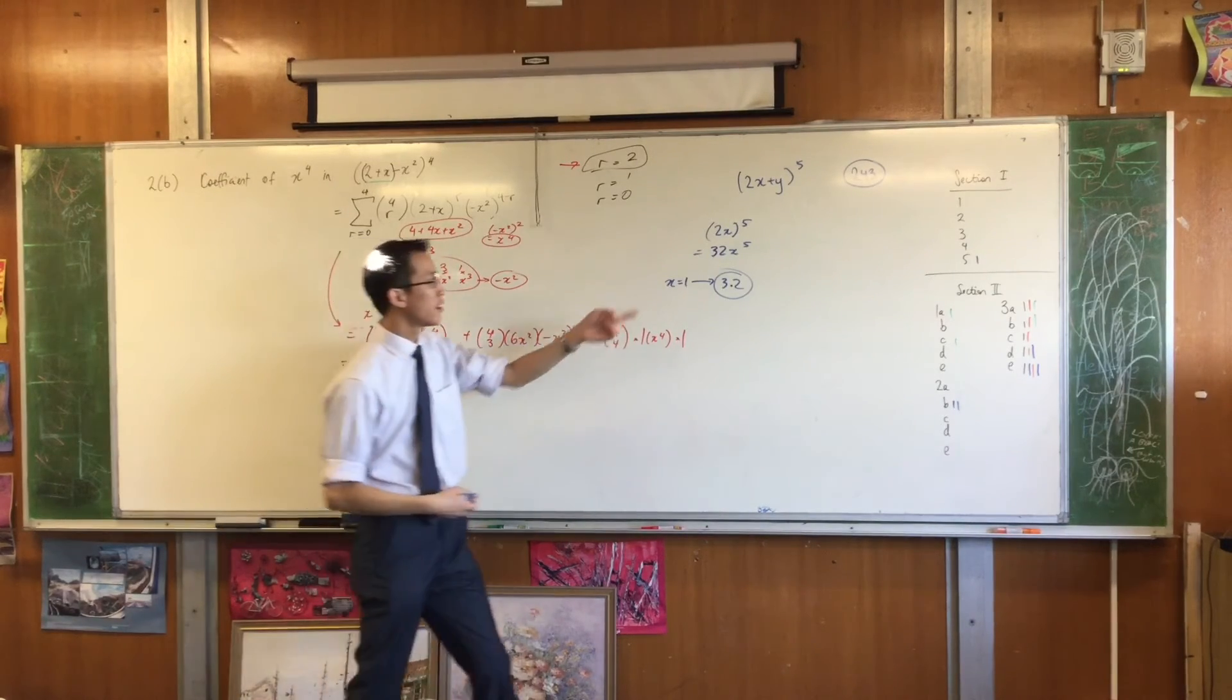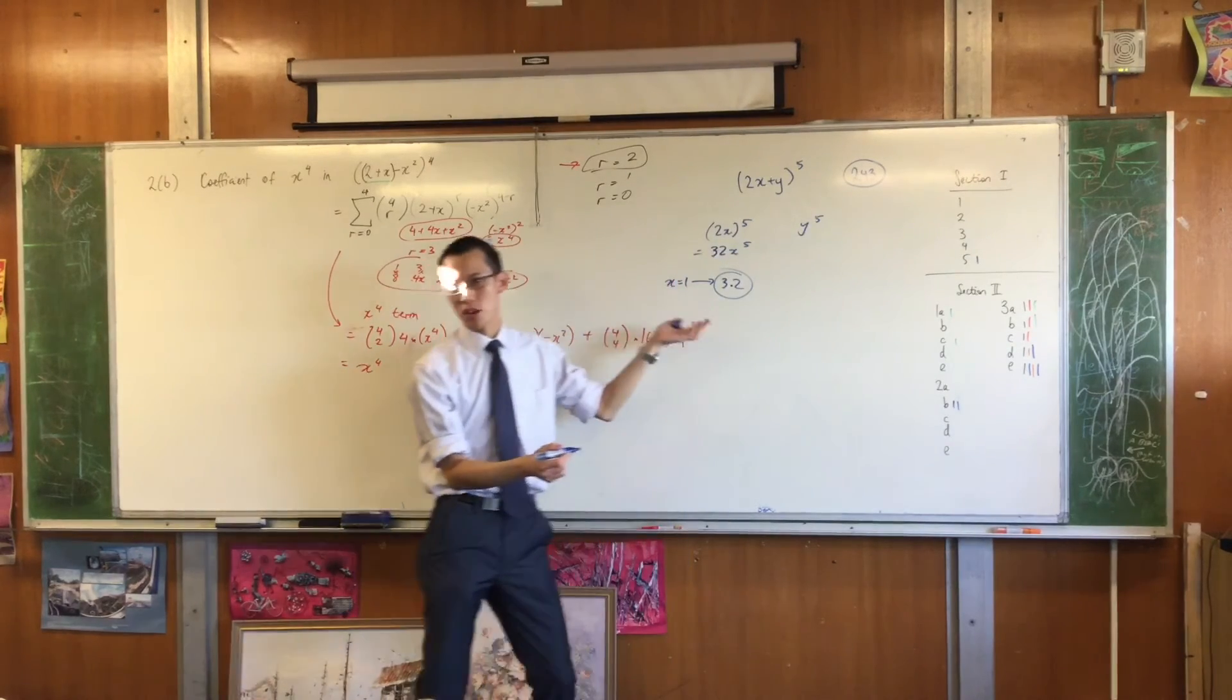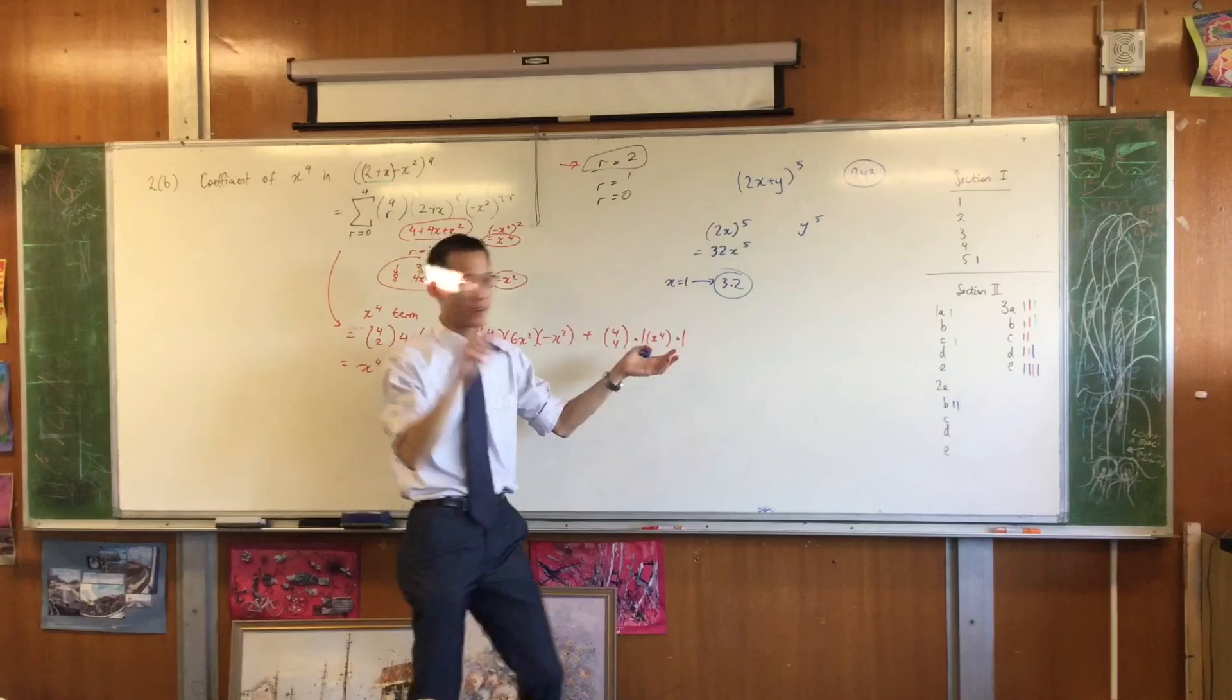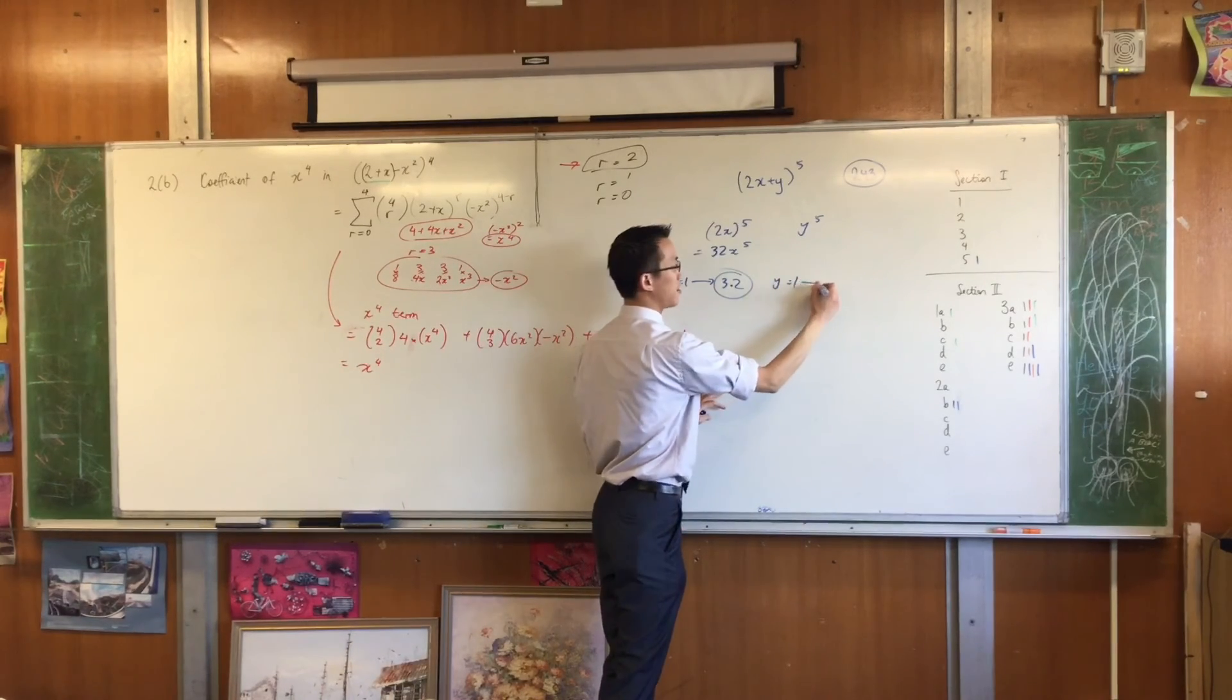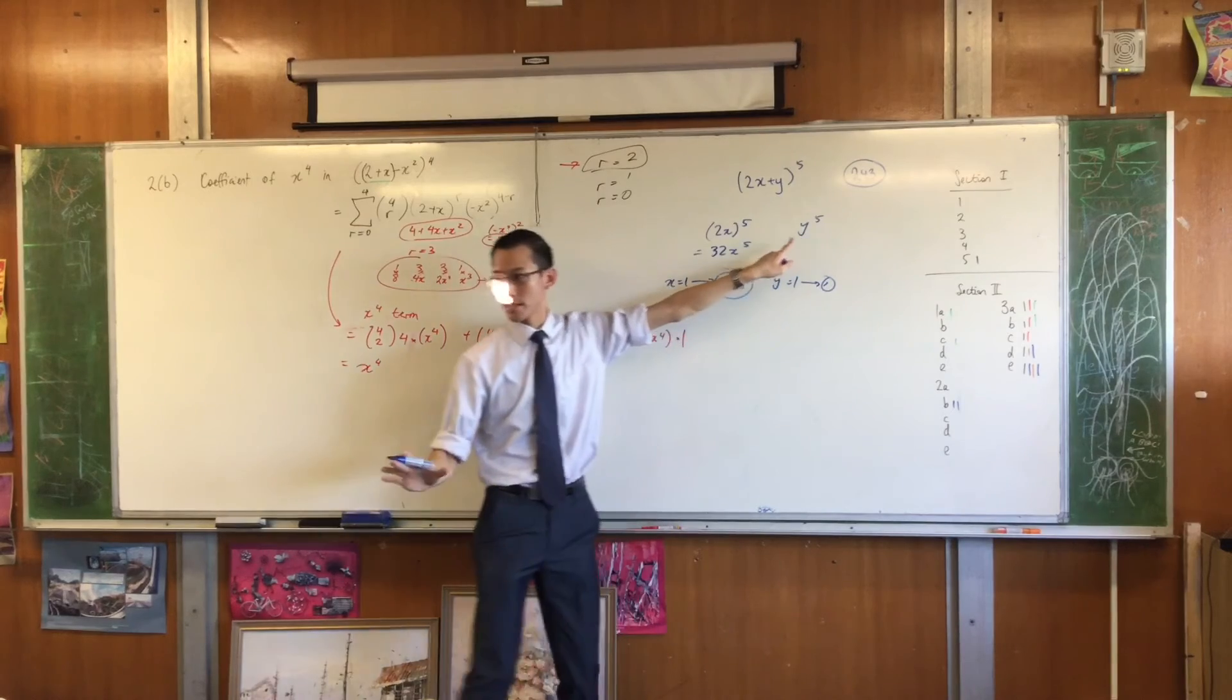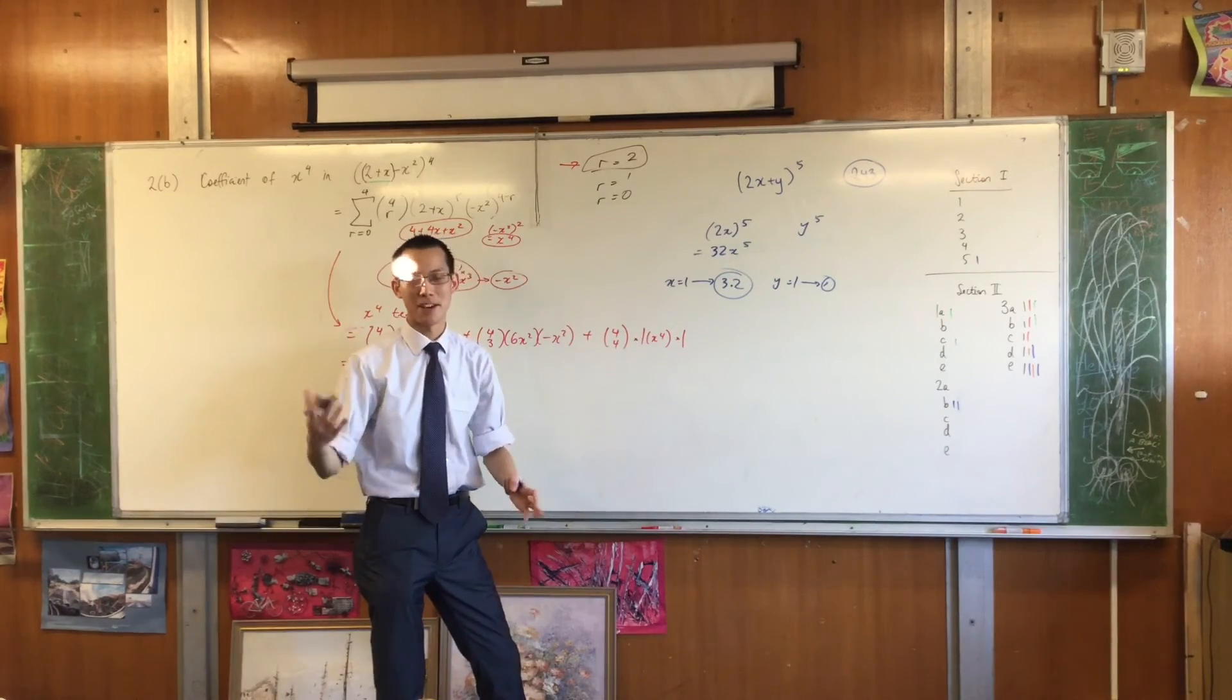In the same way, if you make y equal 1, the last term is going to be y to the 5, right? Well the value that you're after in this case is 1. So again if you make y equal 1, then you will get out just the 1 that you're after. Does that make sense?